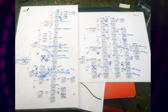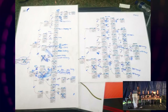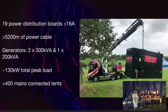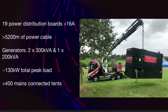No plan survives contact with the real world. We did put our power order in quite late. Our supplier Templant are fantastic — actually one of my favorite suppliers. They said they'd have to substitute a few things and move things around, since they didn't quite have enough of certain items. We ended up with 119 power distribution boards of more than 16 amp, more than 5,200 meters of power cable, and three generators — two 300 KVA and one 200 KVA. That's 800 KVA of power capacity, of which we had 130 kilowatts total peak load. We didn't need those big generators, and in fact we didn't order them — they just said we'd have to have these vast 300 KVA generators.